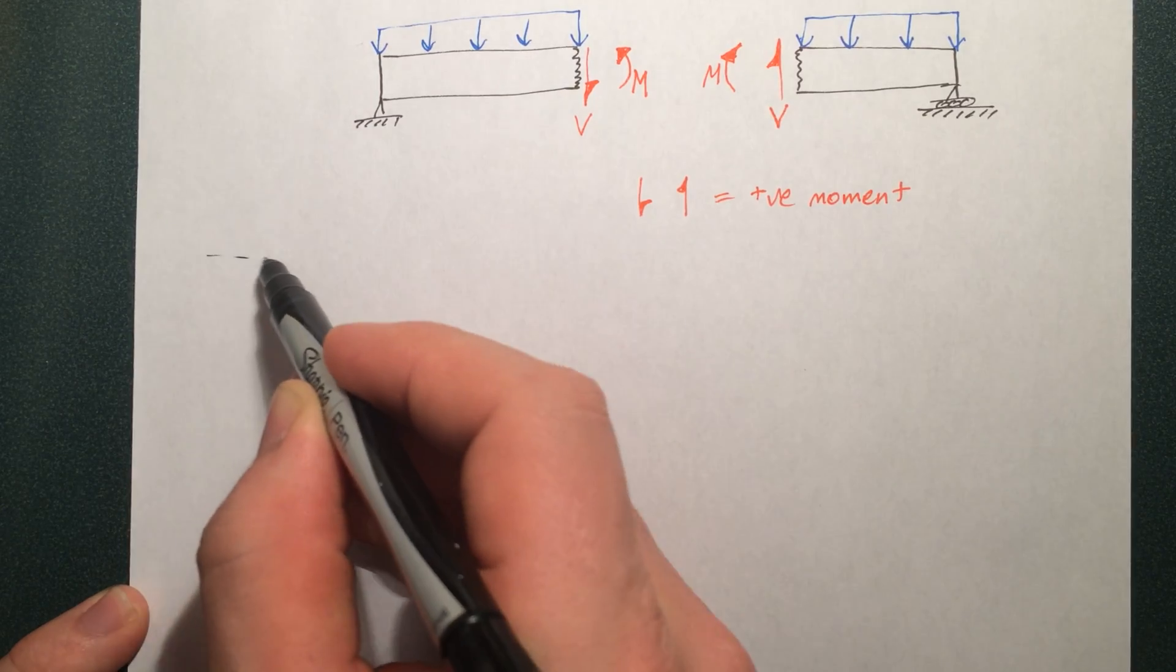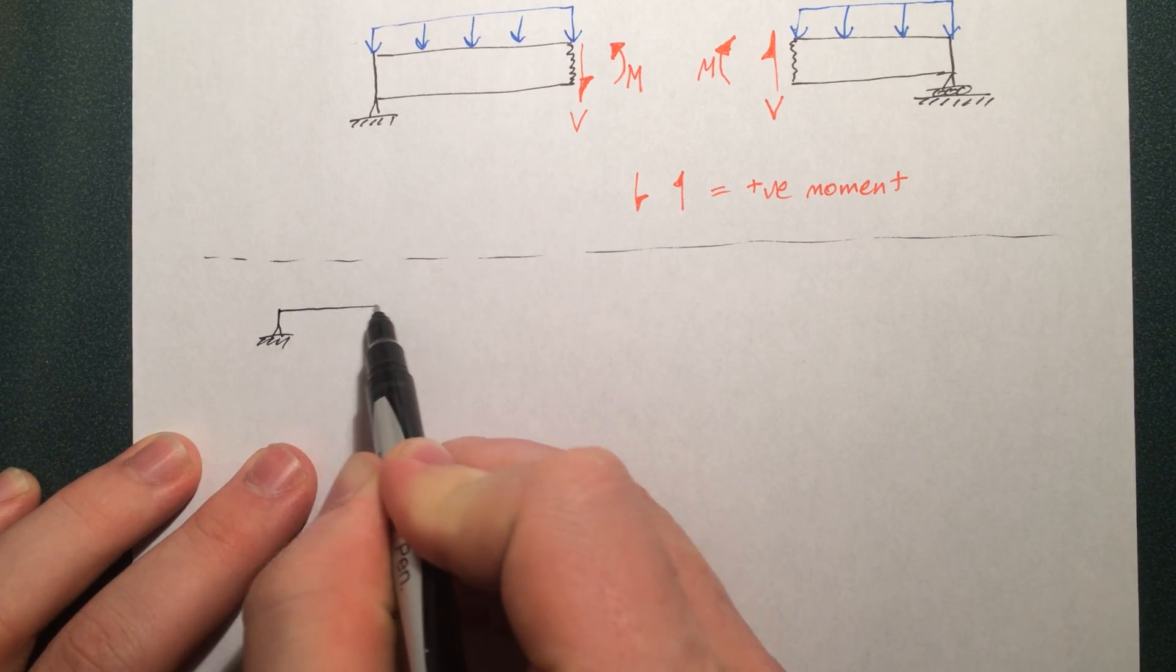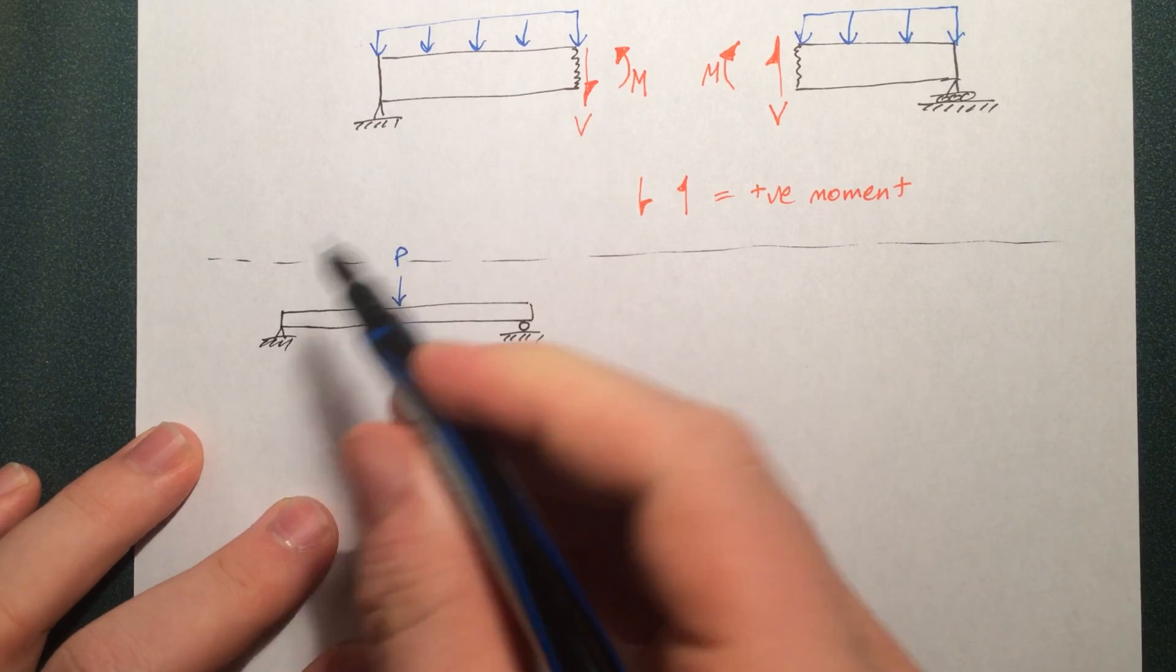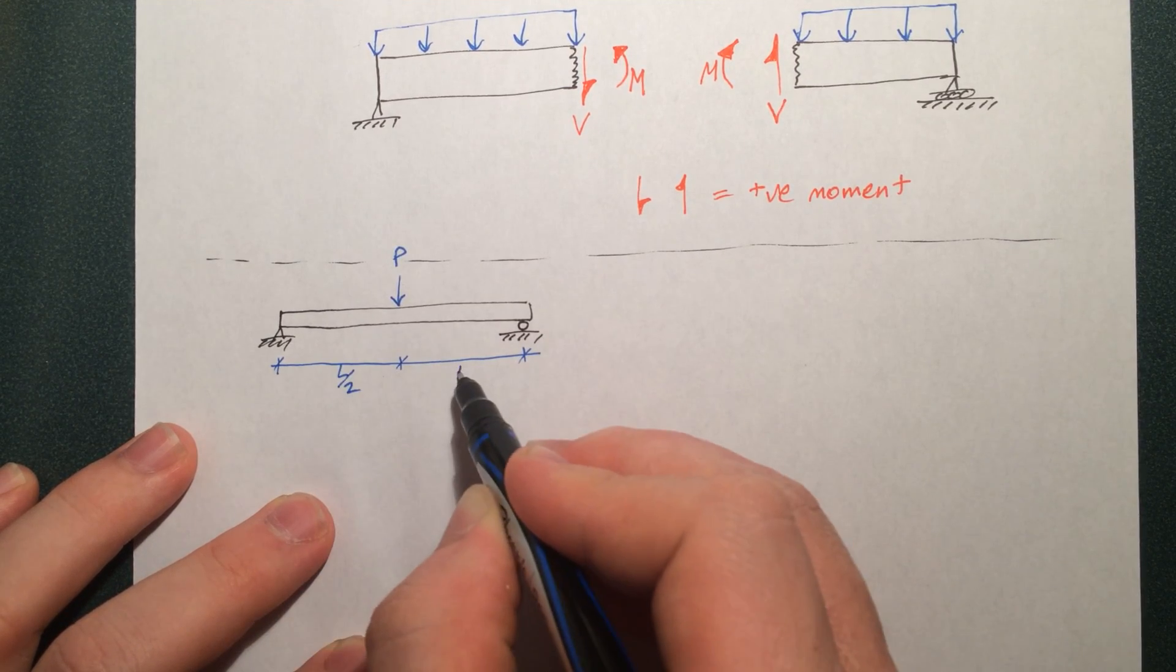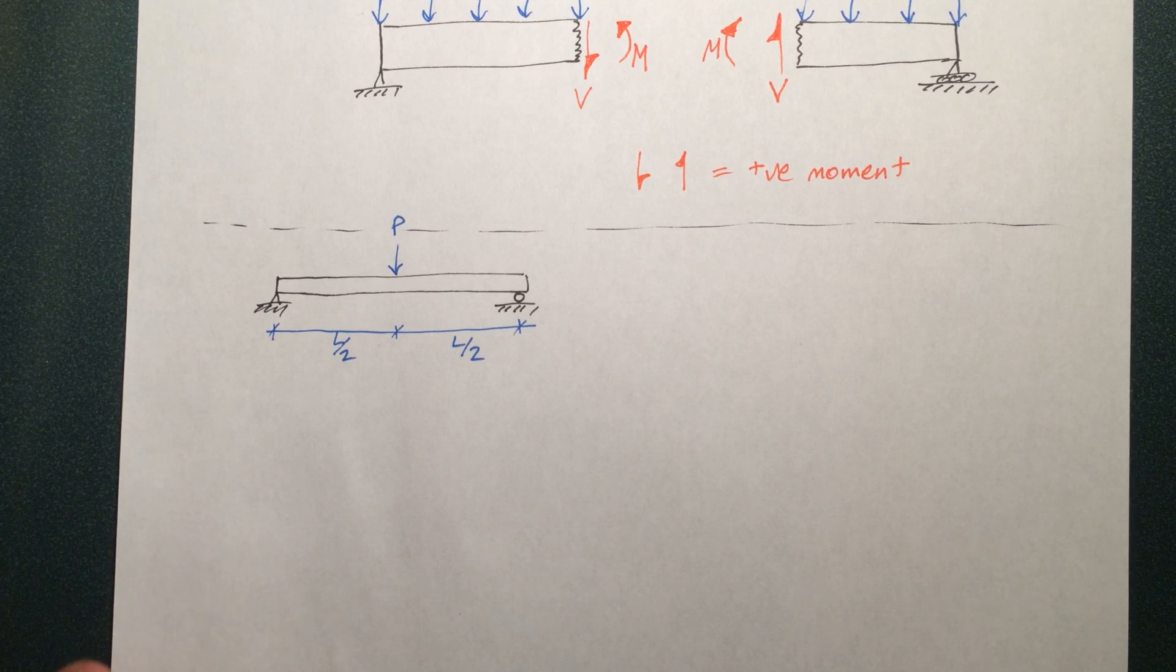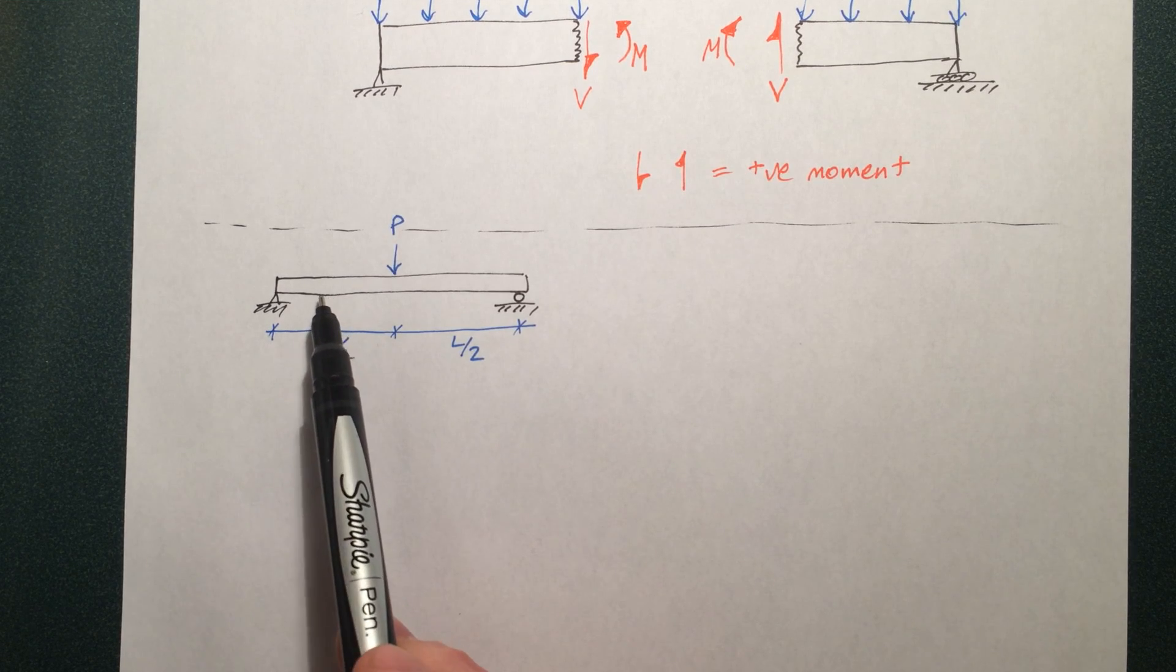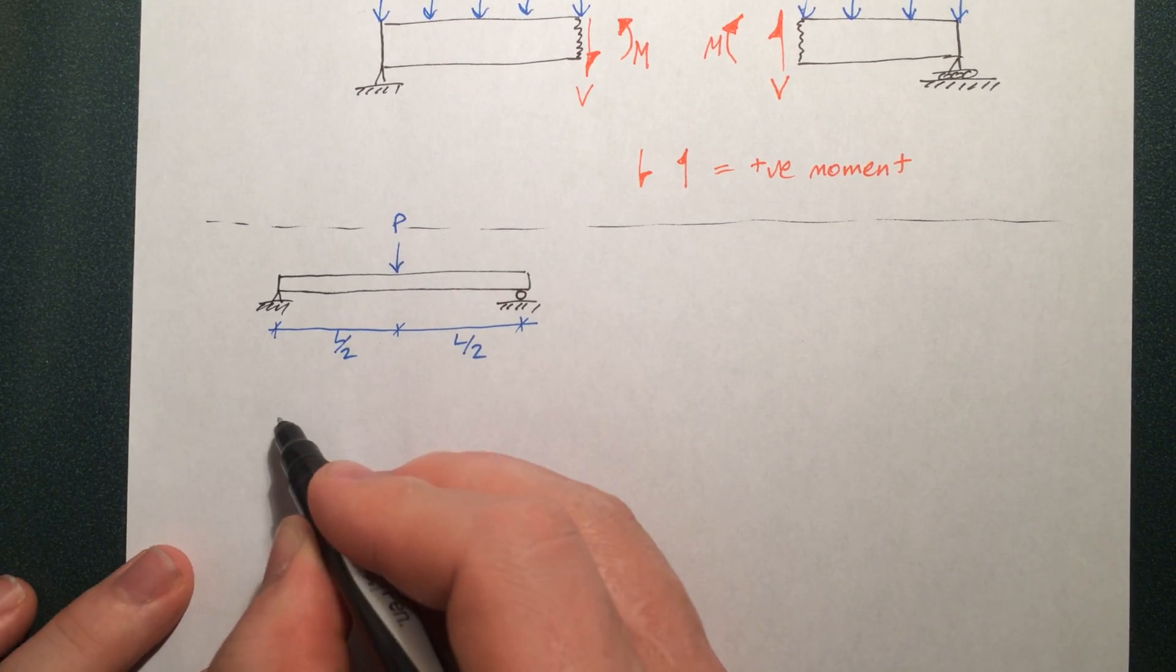So here's the beam we're going to take a look at. Just a simply supported beam with a single load in the middle. So the first step in any of these beam problems is going to be to find the reactions at the support. No matter what the beam problem is, you need to know that. Because later on when you go to find equations describing the shear force and bending moment, you'll need to know those reactions. So always go about and find the reactions at the support first. So we can do that by making an overall free body diagram.